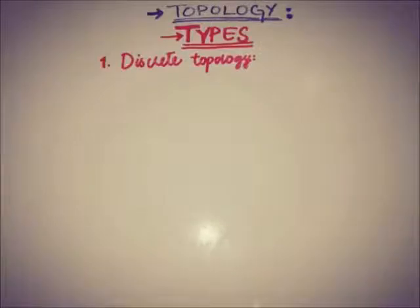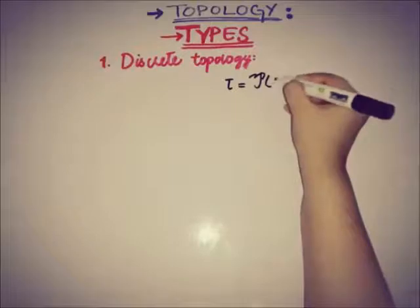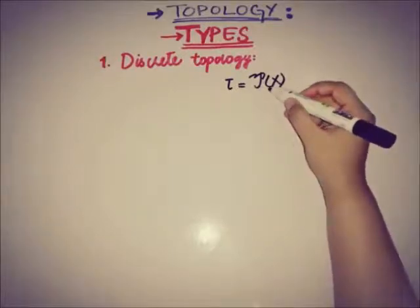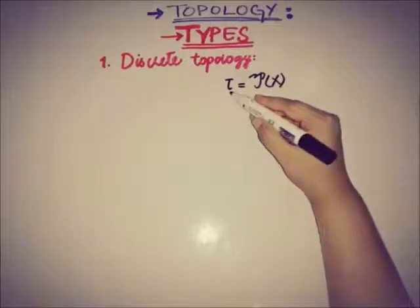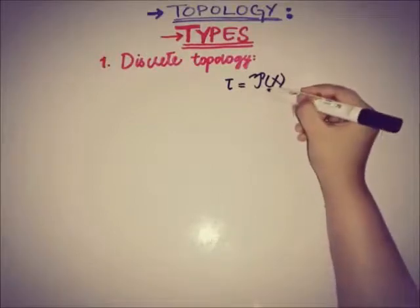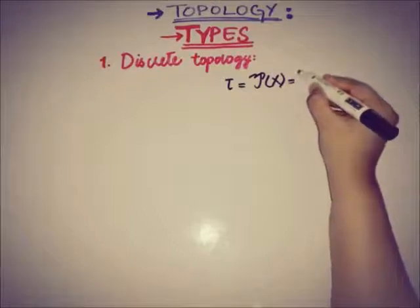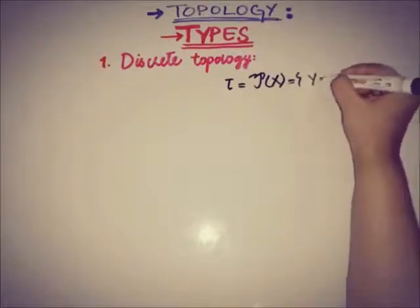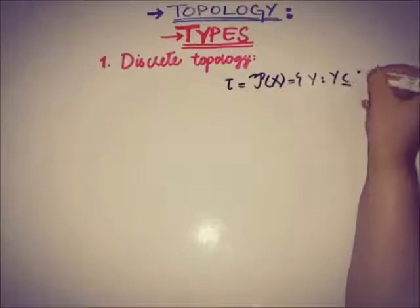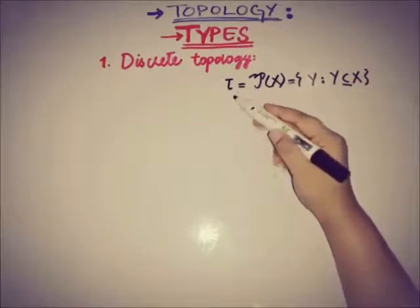The first type is discrete topology. If X is any set, then tau is said to be a discrete topology if it is of the form of the power set of X — meaning tau contains all of the possible subsets of X. This can also be represented as: for all Y, if Y is a subset of X then Y is in tau. Such a topology is called a discrete topology.